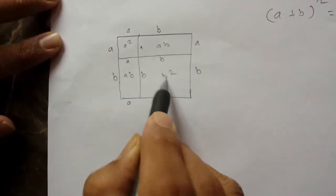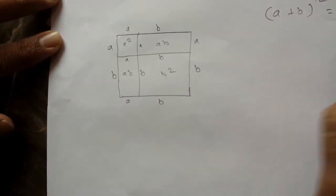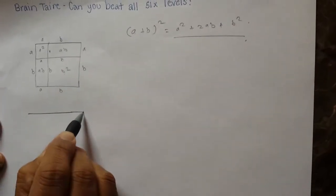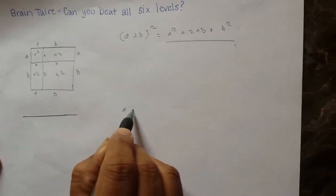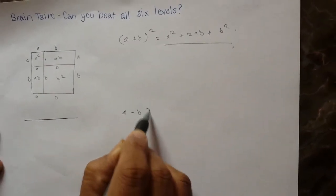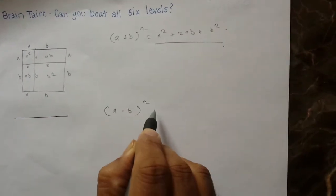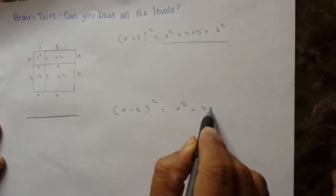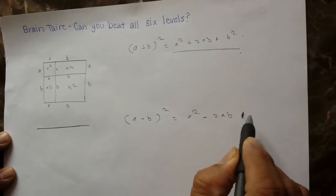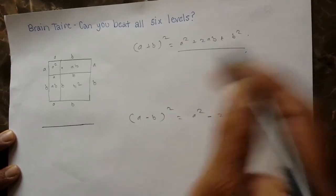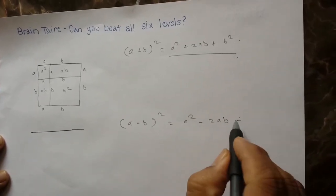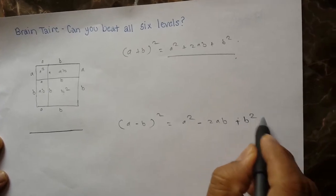So you have a squared plus b squared plus 2ab. Now the same thing — let's try to find (a minus b) squared, which is equal to a squared minus 2ab plus b squared.